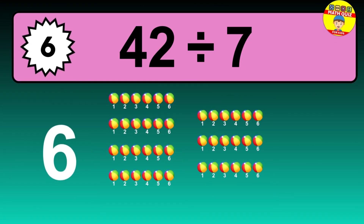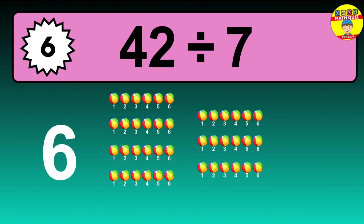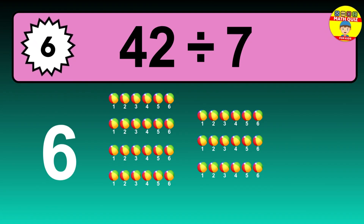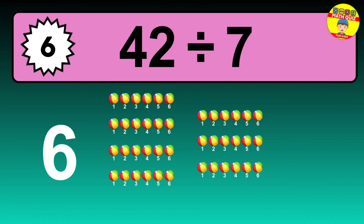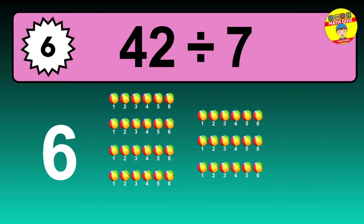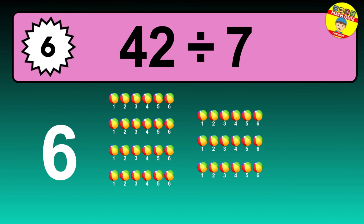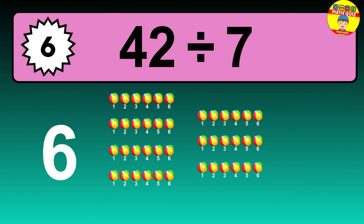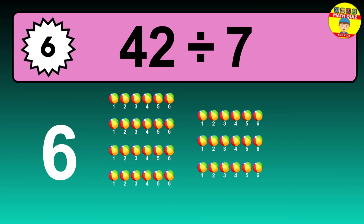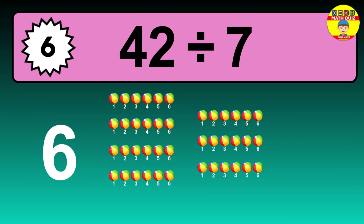Let's go to the solution. Divide the number 42 by 7. Each group contains 7 units, so dividing 42 by 7 results in 6 equal groups. Thus, the result is 42 divided by 7 equals 6.